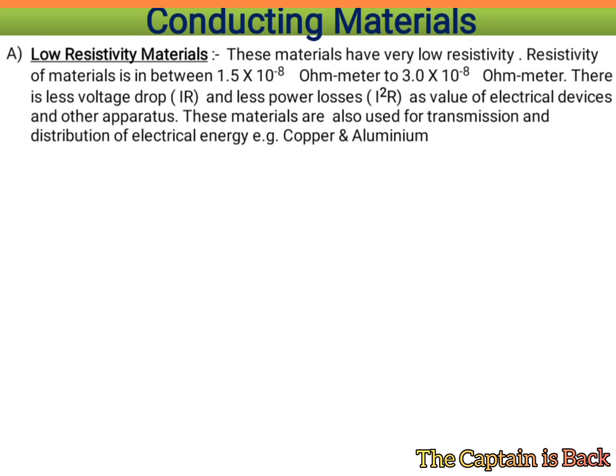Low resistive materials have very low resistivity, ranging from 1.5×10⁻⁸ ohm-meter to 3.0×10⁻⁸ ohm-meter. There is less voltage drop (V = IR) and less power loss (I²R). These materials are used for transmission and distribution of electrical energy. Examples are copper and aluminium, as less power is dissipated.